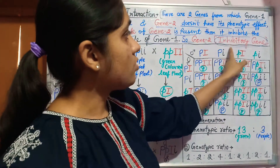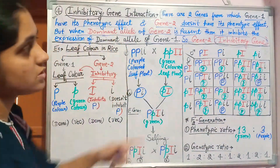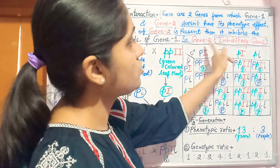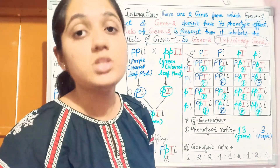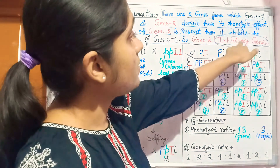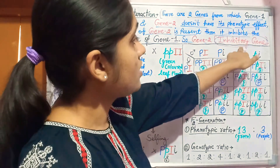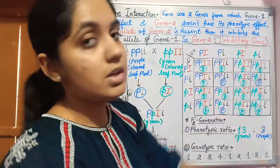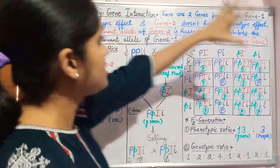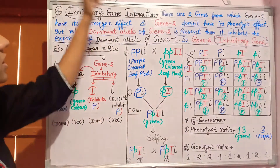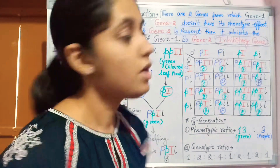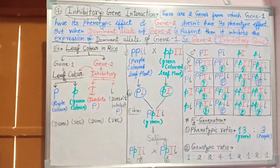Because gene two performs the function of inhibition, it is also known as the inhibitory gene. Since this inhibition occurs in this gene interaction, it is known as inhibitory gene interaction.